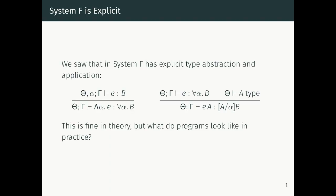What we've seen in System F is a style of programming that lets you program generically. We have a universally quantified type — for all alpha dot B — and this is a term B which works for any choice of type alpha. Whenever we have something of polymorphic type, we supply a type argument and get an instantiation of B: we substitute A for alpha in B, and that's the type of the type application. By changing the type argument to the polymorphic function, we're able to change the type at which you can use it.